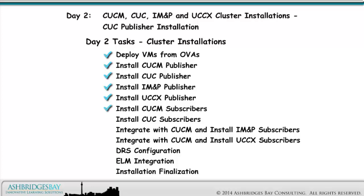Then we install our CUCM, CUC, IM&P, and UCCX subscribers. We activate the services we need in the CUCM cluster when we install the IM&P and UCCX subscribers, and integrate IM&P and UCCX with CUCM. Then we configure DRS for all four applications, integrate CUCM and CUC with ELM, and do final tasks like upgrading VMware tools and configuring Virtual Machine startup and shutdown.